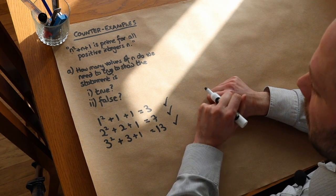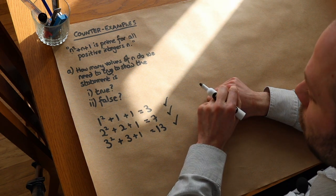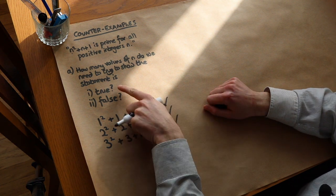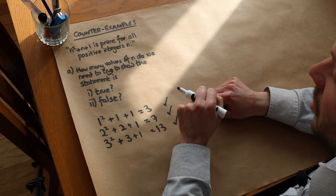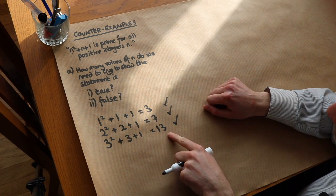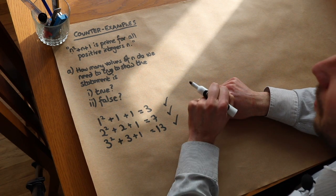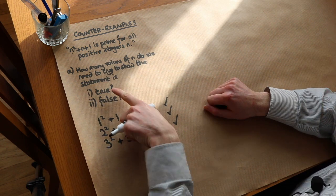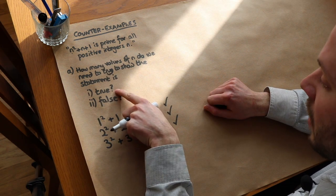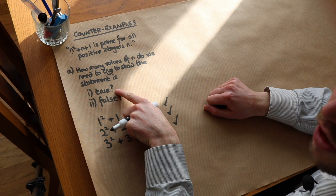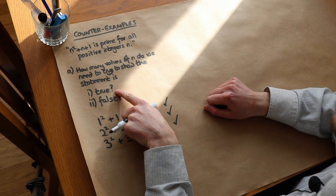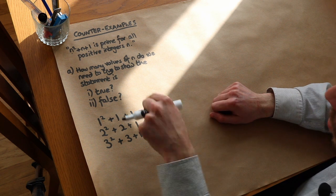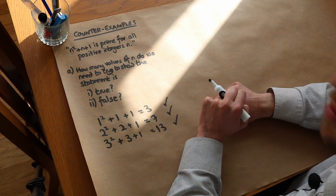That would be very unmathematical — you can't conclude that at all. Just because you've shown it's true for a few cases, it's not enough to show it's true for all positive integers. How many examples would we need? We would have to go up to infinity, because there are infinitely many positive integers, and we obviously can't try every single case.